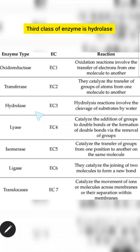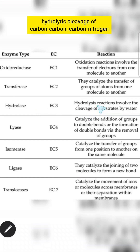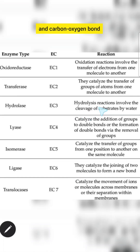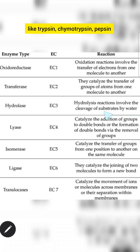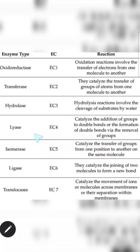The third class of enzyme is hydrolase. The hydrolase group of enzymes catalyzes the hydrolytic cleavage of carbon-carbon, carbon-nitrogen, carbon-oxygen bonds, and other covalent bonds. Examples are all the digestive enzymes like trypsin, chymotrypsin, pepsin, proteases, and amylase — they all belong to the hydrolase group.